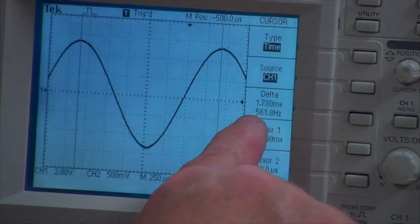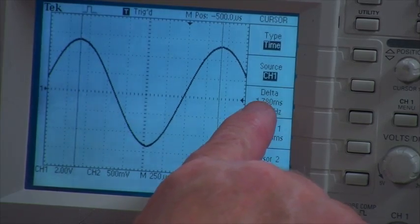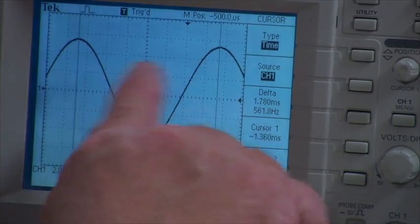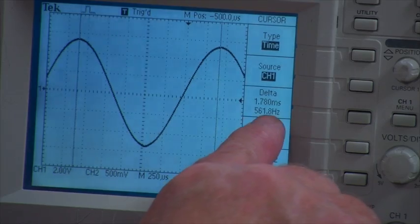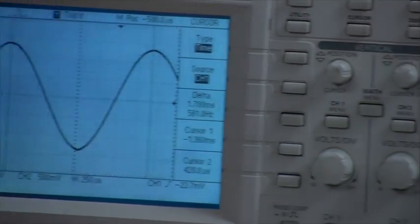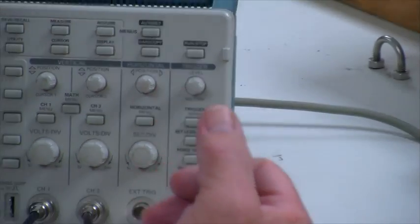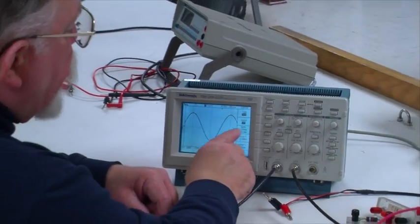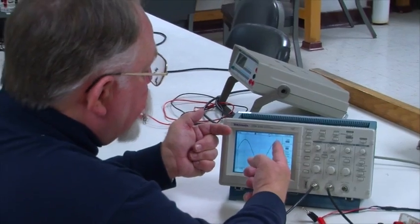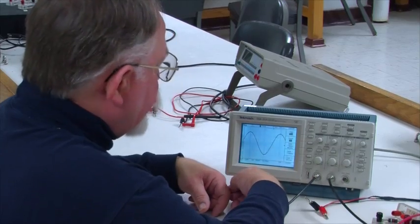The difference is 1.78 milliseconds. The reciprocal of that, that's what this number below it is, it's simply the reciprocal of the time between the cursors. It says about 562 hertz, which is, my output over here says 560. So it's a reasonably accurate way to measure the period and then calculate the frequency of a signal.